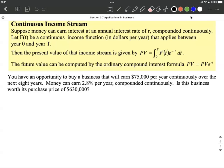So we're calling that F of T, the amount of continuous income that is going to be brought in in dollars per year for the next T years.